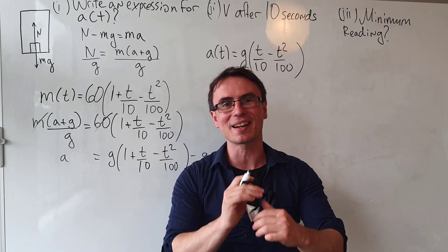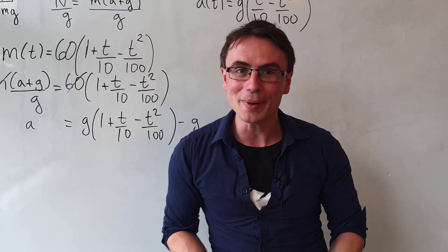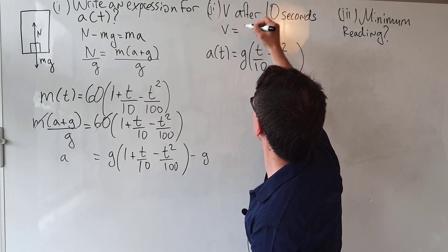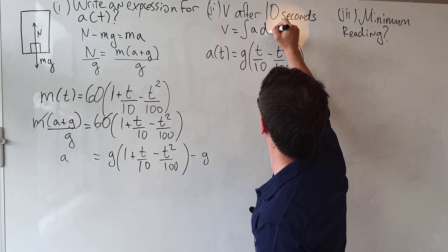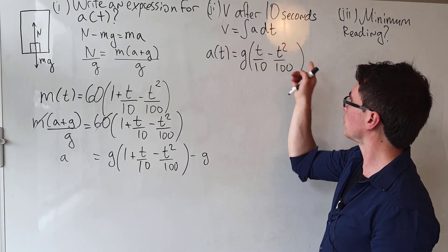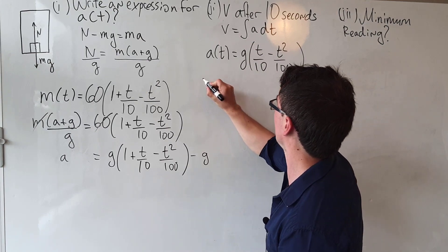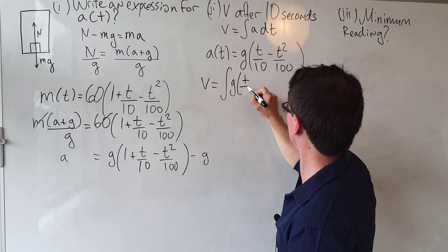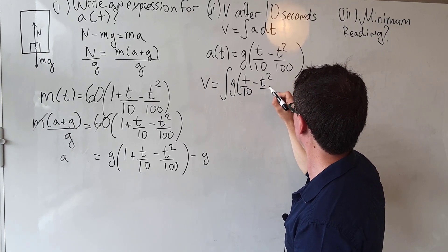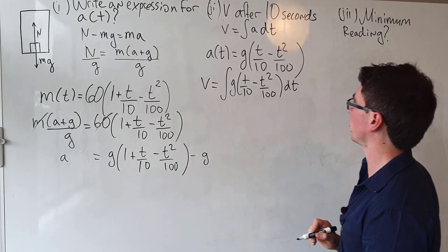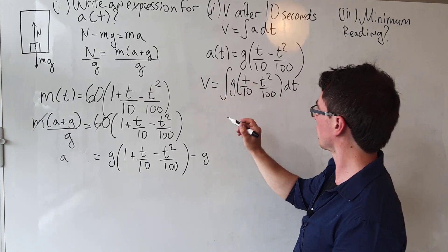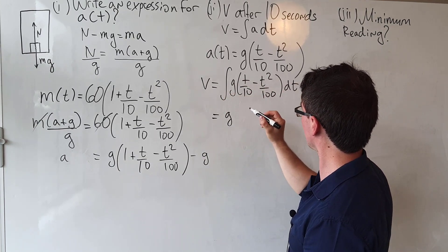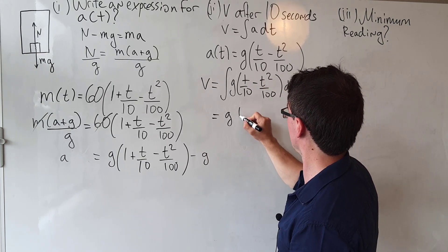For the next part, we need to find the speed after 10 seconds. Acceleration is changing with time, which means we must integrate. The velocity equals the integral of the acceleration with respect to time, so we integrate the expression. The speed equals the integral of g(t/10 − t²/100) dt. Since g is a constant, we can take it outside the integration sign.